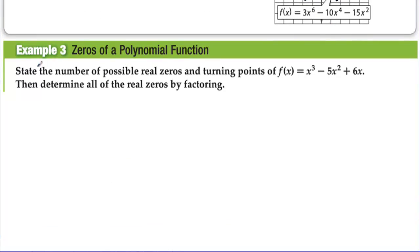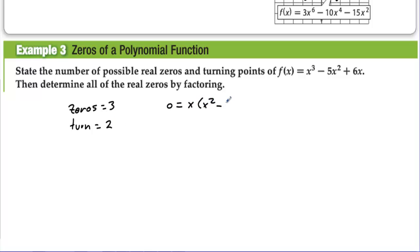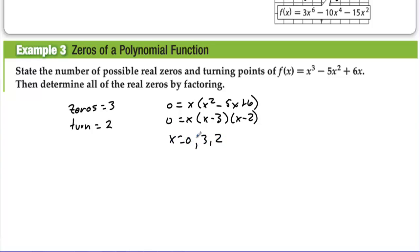Finding zeros of a polynomial: state the number of possible real zeros and turning points, then determine all real zeros by factoring. For a degree-3 polynomial, there could be up to 3 distinct zeros and 2 turning points. Factoring out x gives x(x² − 5x + 6), which factors to x(x − 3)(x − 2), so x = 0, 3, and 2 — three distinct zeros — and the graph would have 2 turning points.